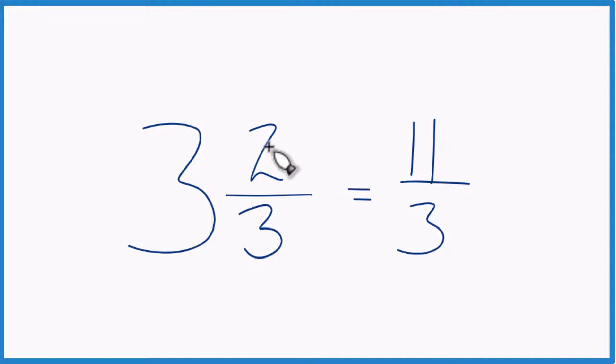So 3 and 2 thirds, the mixed number, that equals the improper fraction 11 thirds. And these are equivalent. They have the same value, it's just different representations of that value.